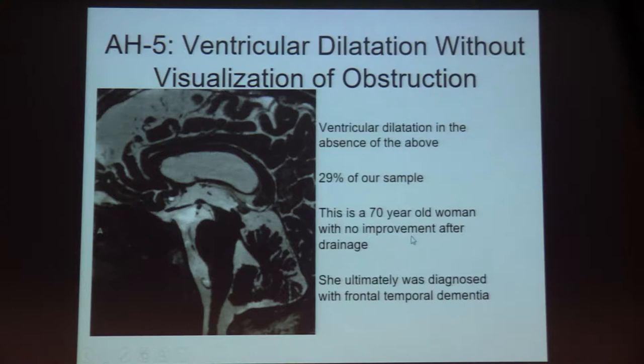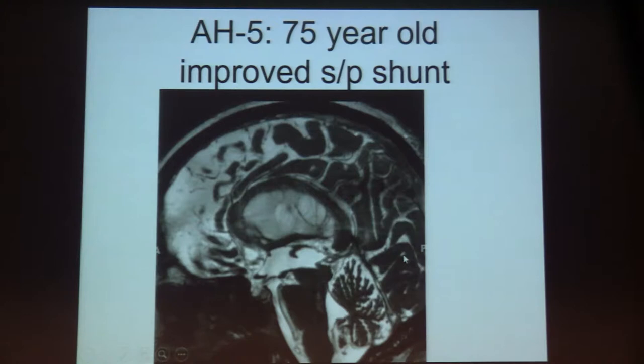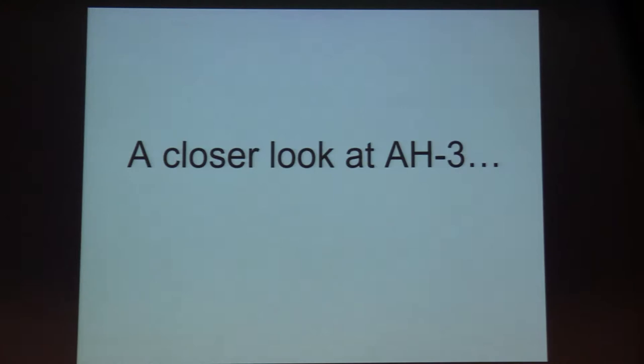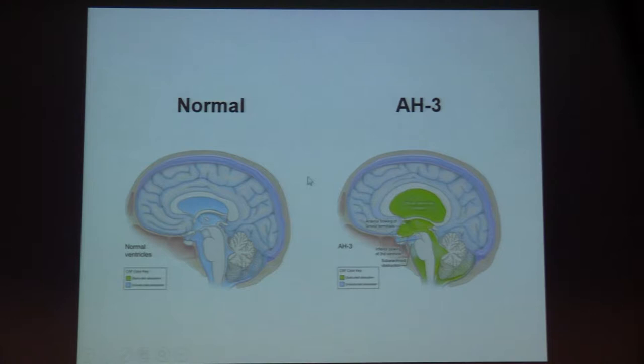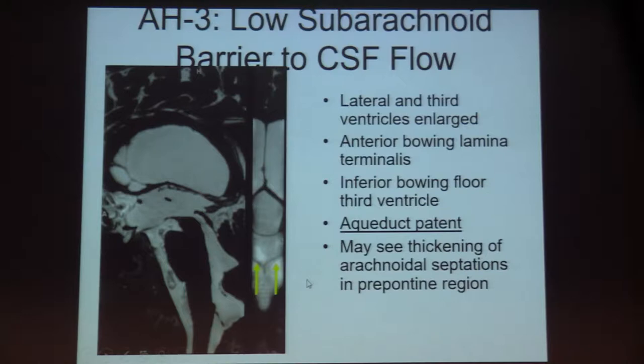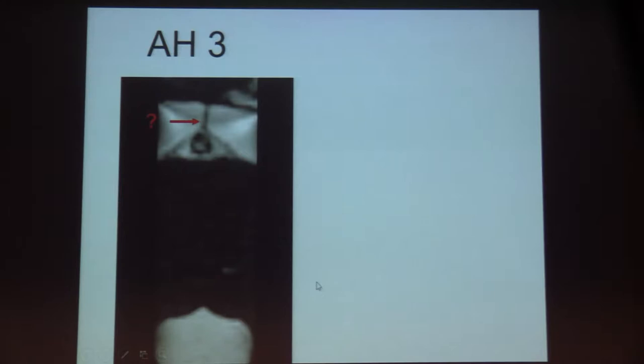That's still about a third of our sample. A 70-year-old patient with no improvement after drainage was ultimately diagnosed not with hydrocephalus but with frontotemporal dementia. As a cautionary note, a 75-year-old woman who also fits in the AH5 category did improve after shunt. Going back to the third category: these are patients with a posterior basal cisternal obstruction, and the question again is what is this membrane ventral to the pons.